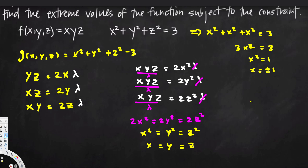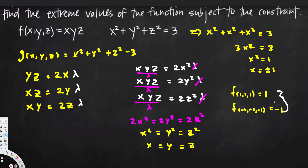Since x = ±1, we have two critical points: f(1,1,1) = 1×1×1 = 1, and f(-1,-1,-1) = (-1)×(-1)×(-1) = -1. The value 1 is our local maximum and -1 is our local minimum. That's how we use Lagrange multipliers to find extreme values.